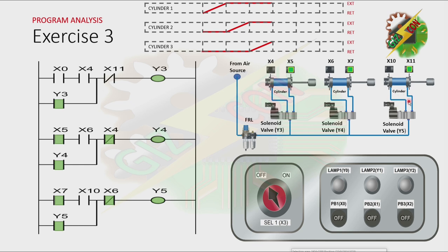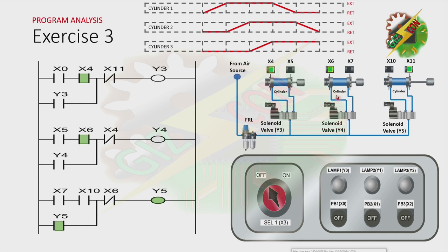Now because Cylinder 3 is at the fully extended position, X11 is now energized. The normally closed contact of X11 will open, causing Y3 to turn off. Because Cylinder 1 is at the fully retracted position, X4 is now energized, causing Y4 to turn off and Cylinder 2 to retract. Because Cylinder 2 is at the fully retracted position, X6 is energized, causing the normally closed contact of X6 to open, turning off Y5 and causing Cylinder 3 to retract.